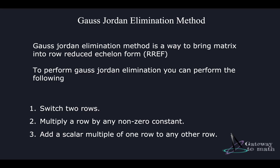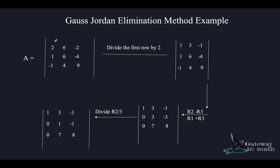To perform Gauss-Jordan elimination, the permitted operations are: switching two rows, multiplying a row by a non-zero constant, or adding a scalar multiple of one row to another row. Let's take an example. I have a matrix, and the first thing I need is for the pivot element to be 1. So I divide the first row by 2, making it: 1, 3, -1. Now the first row is sorted. To get zeros below the pivot in the first column, I add R1 to R2 to get zero there, and subtract R1 from R3. This gives second row: 0, 3, -3, with right-hand side value; and third row: 0, 7, 8, with its right-hand side value.